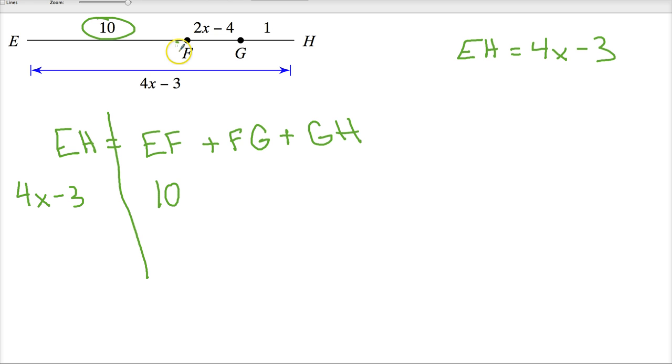They may give you verbal information or written information as opposed to this. 2x minus 4 is FG and GH is 1. Just like the other type, it's really important to do this statement on paper before you move forward, just because it helps you line everything up and make sure you don't miss the order.